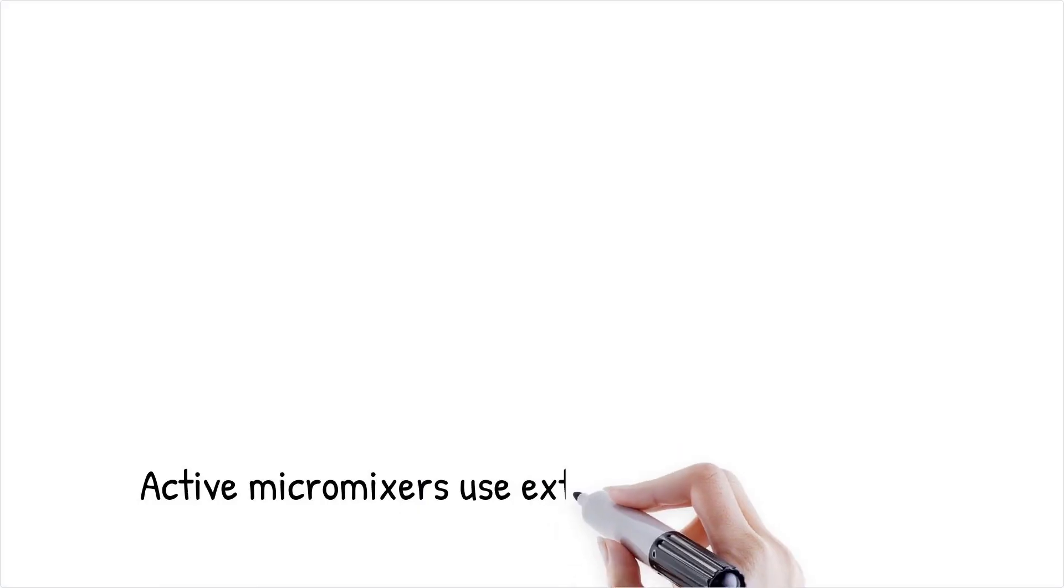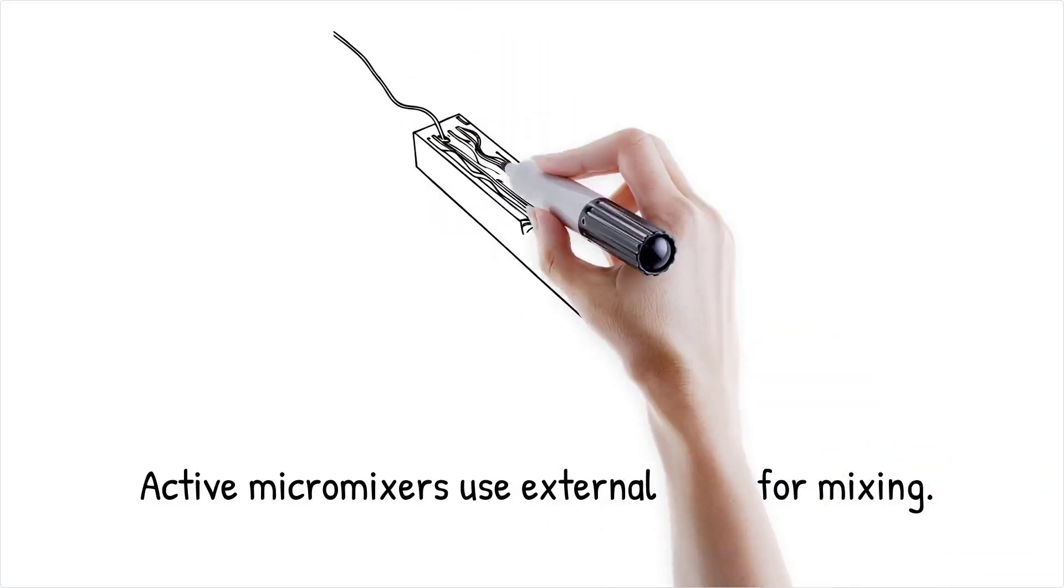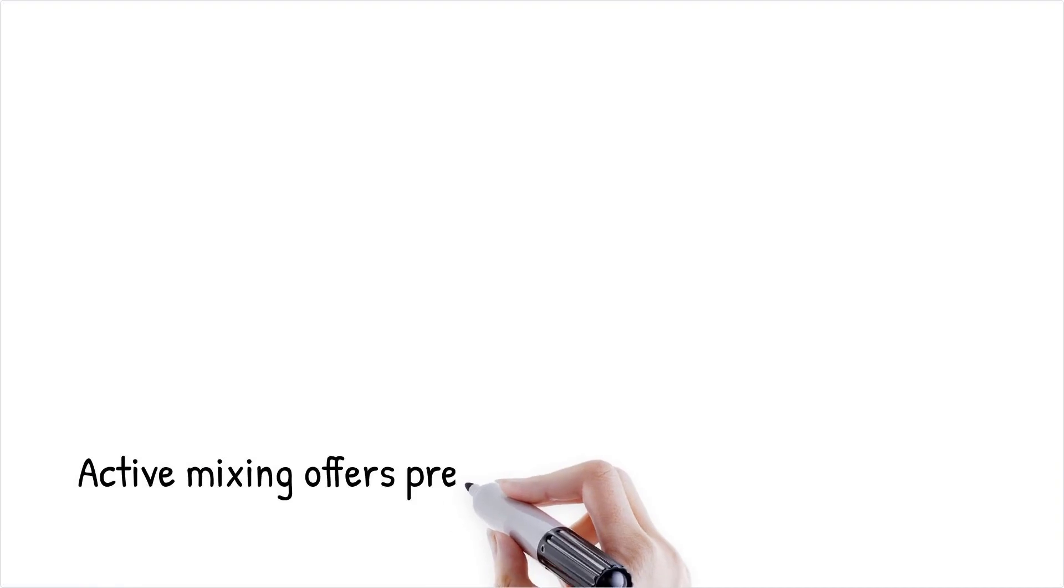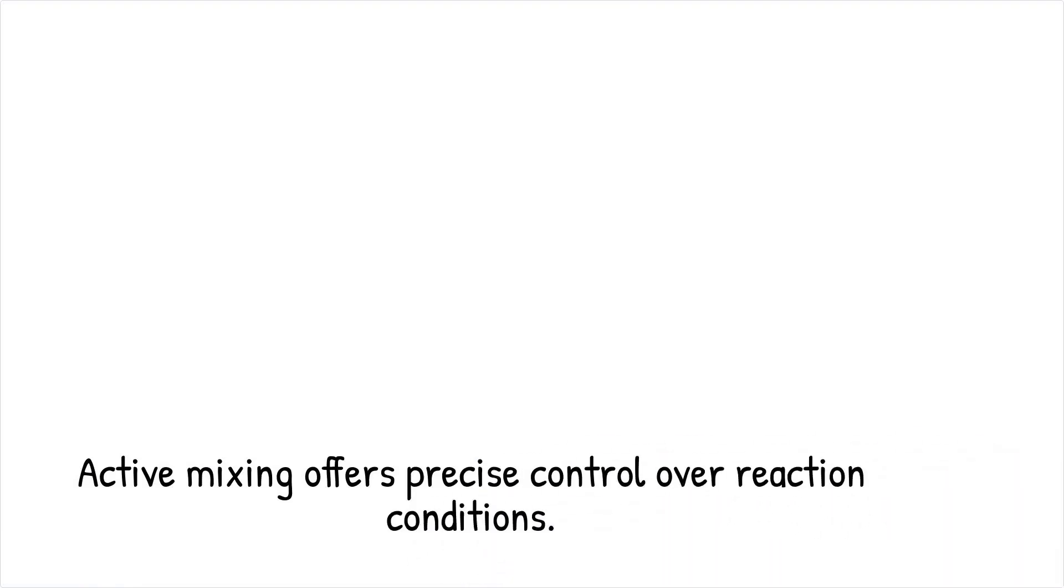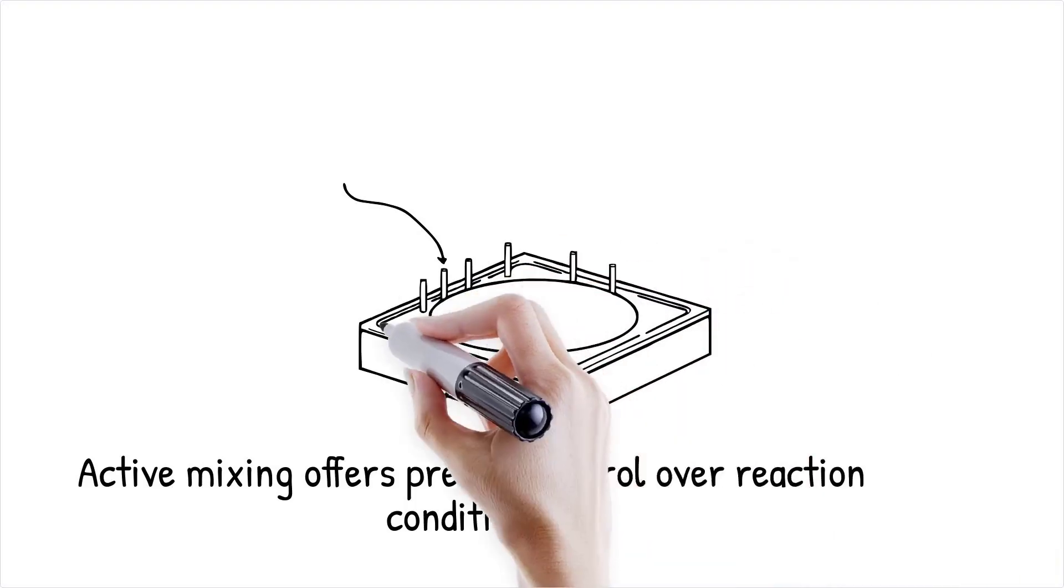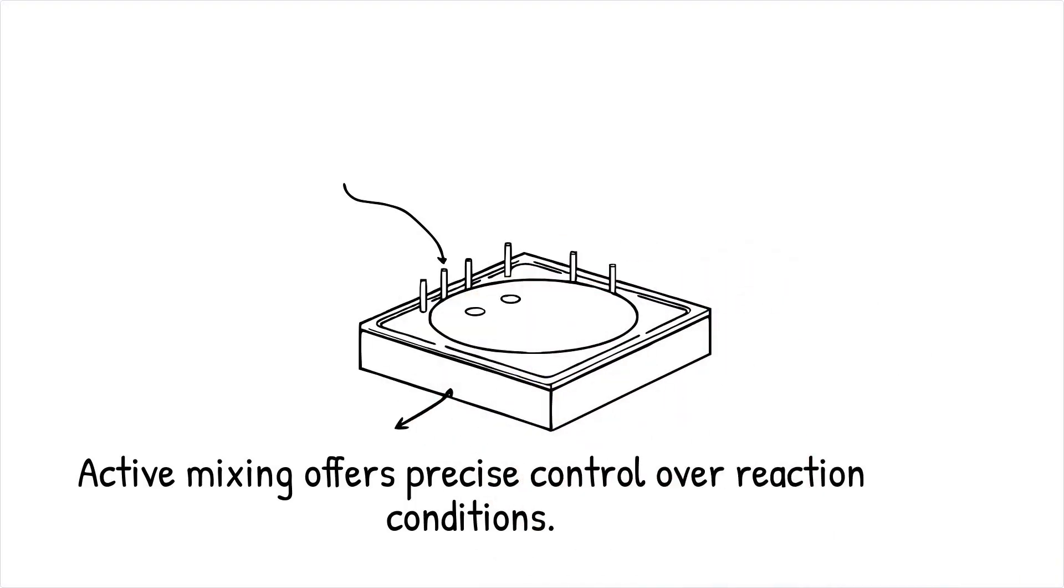Active micromixers use external fields such as electric, magnetic, acoustic, or thermal forces to induce fluid movement and enhance mixing. These methods introduce localized perturbations that disrupt laminar flow, enabling rapid and tunable mixing in microchannels. Although active mixing requires additional power sources, it offers precise control over reaction conditions and is ideal for complex biochemical applications.